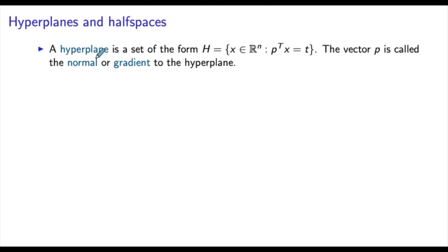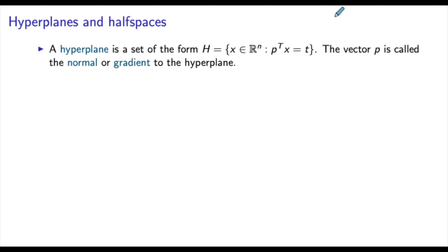A hyperplane is a set of points in the Euclidean space of dimension n that satisfy a linear equation p transposed x equals t, where p is an n-dimensional vector of coefficients for x, and t is the scalar on the right-hand side. The vector p is called the normal or the gradient of the hyperplane.